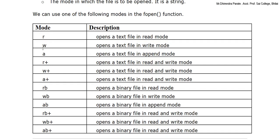Here we discuss the file modes. r opens a text file in read mode. w opens a text file in write mode. a opens a text file in append mode. r+ opens a text file in read and write mode. w+ opens a text file in read and write mode. a+ opens a text file in read and write mode. rb opens a binary file in read mode. wb opens a binary file in write mode. ab opens a binary file in append mode. rb+ opens a binary file in read and write mode. wb+ opens a binary file in read and write mode. ab+ opens a binary file in read and write mode. So here we can see some modes that are used for reading and writing.